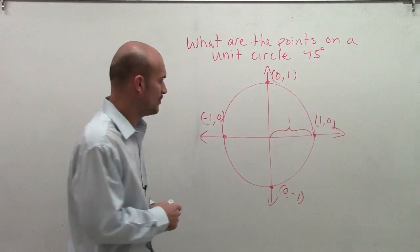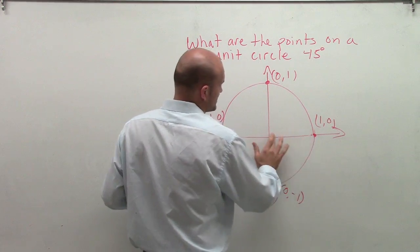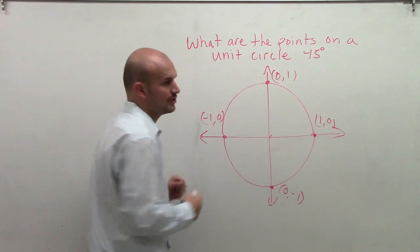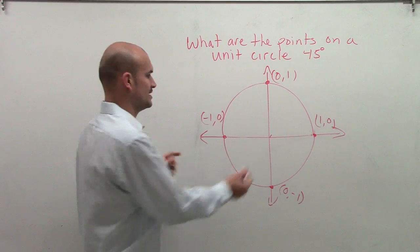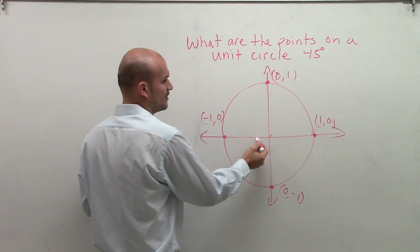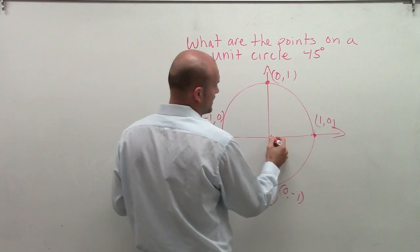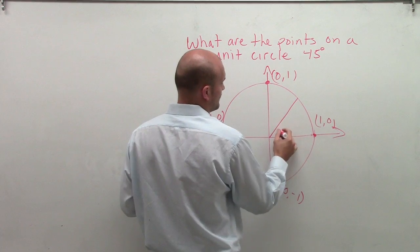So here's my four points. I wrote down 45 degrees because that's the next important point. All the way around a circle is 360 degrees. Halfway around is 180. A quarter of that is 90, and half of that is 45 degrees.